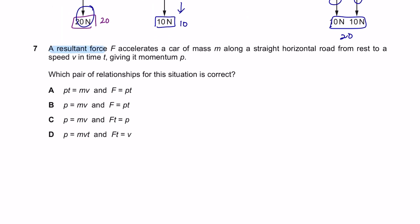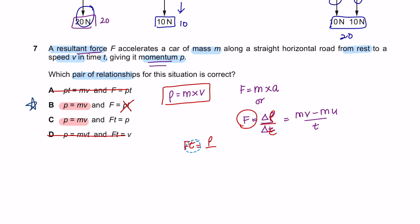Question 7. A resultant force accelerates a car of mass M along a straight horizontal road from rest to a speed V in time T, giving it momentum P. Which pair of relationships for this situation is correct? Okay, so this question is related to momentum and resultant force. Let's first write down the formula related to this. Momentum is mass times velocity and resultant force is mass times acceleration or force can also be defined as the change of momentum per unit time. The change of momentum will be MV minus MU and per unit time T. So let's find out which of these options is correct by rearranging the formula. P equals to MV. Only option B and C shows that. So to find force, it is momentum over time. If I rearrange momentum over time, I can bring T to this side and it will be FT equals to momentum. So the answer is C.